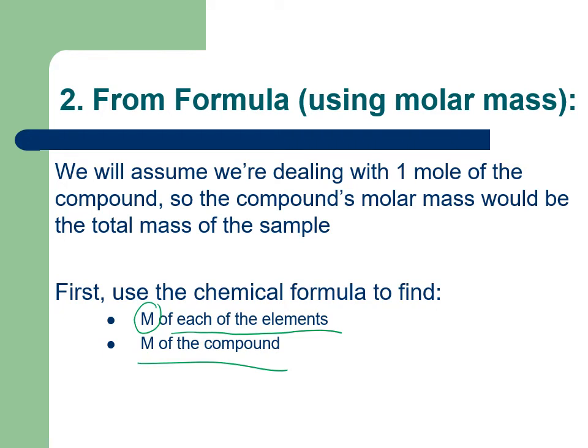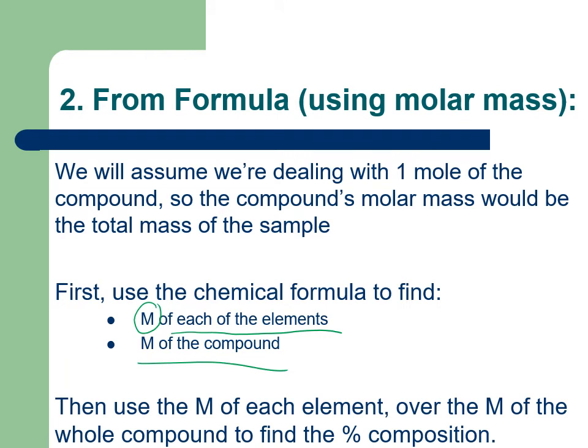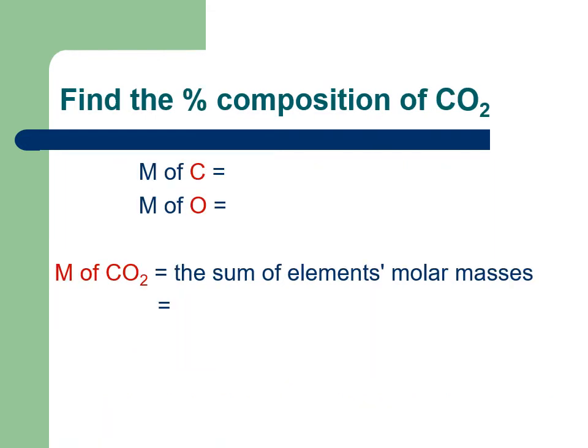Use the molar mass of each element over the molar mass of the whole compound—assuming we have the formula, that will also give us the percent composition. We have our molecule here, CO₂, and we already know the answer because we did it last time, but let's see if we can get the percent composition from just the formula.